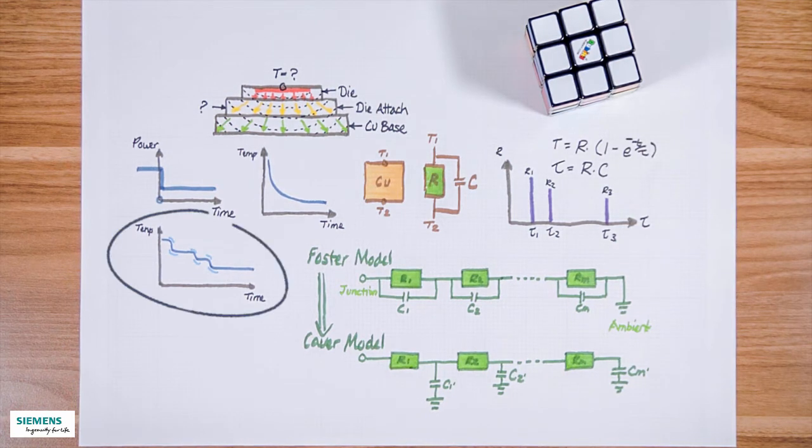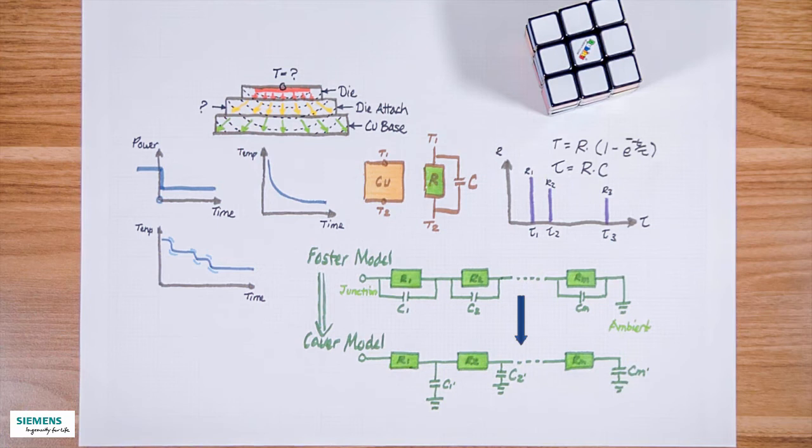To recap, we measure this curve, then we break down the curve to a number of R's and C's. Then we do a mathematical transformation from a so-called Foster-type thermal model to a ladder-shaped Cower model. Once the translation is done and we have these values,